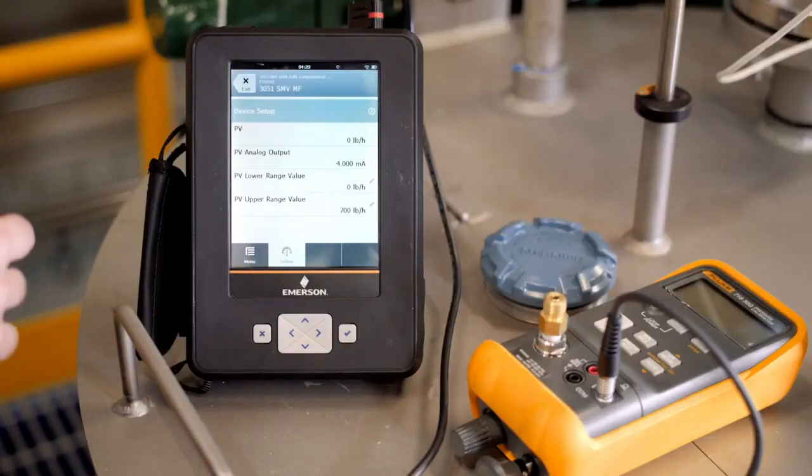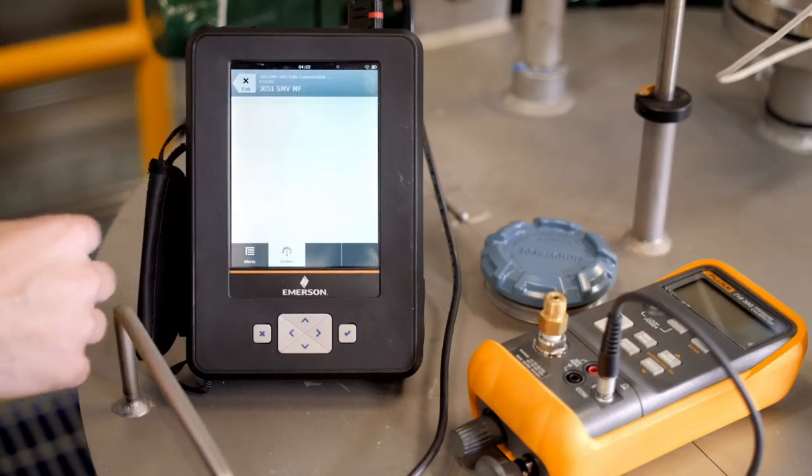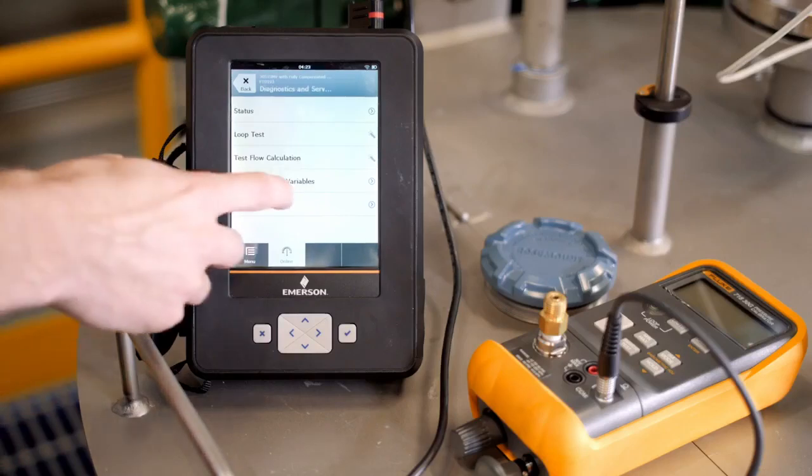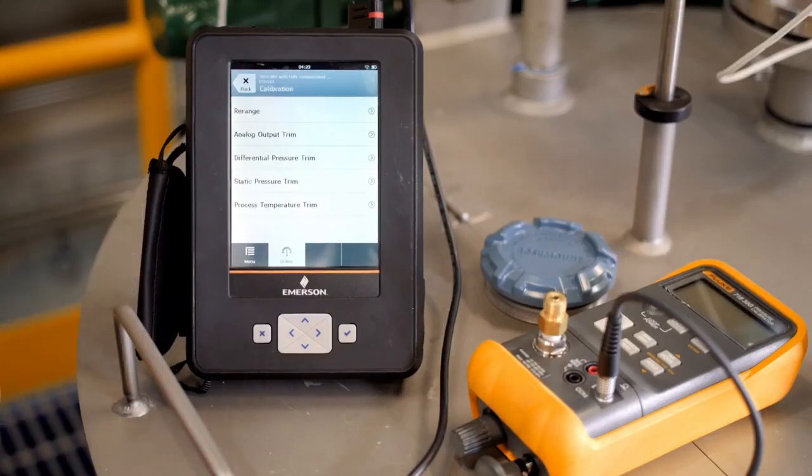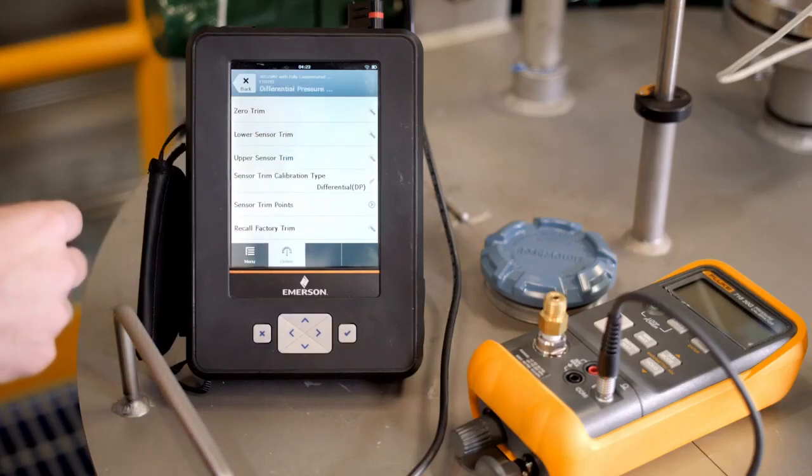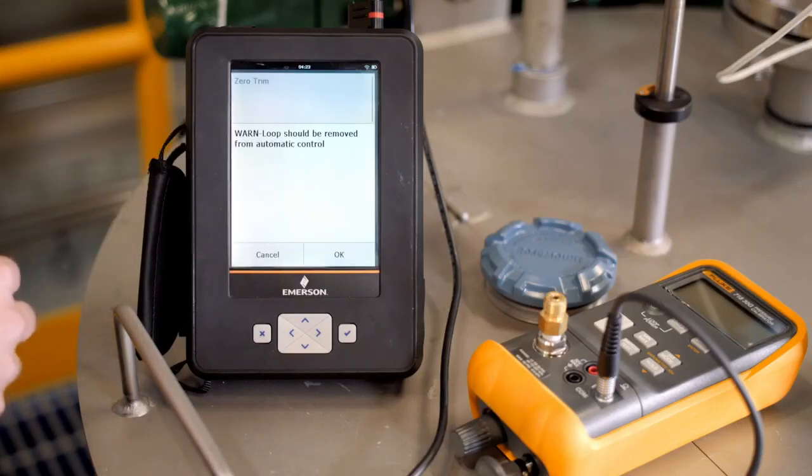To access the zero trim option on the Trex, first find the calibration page. Now select differential pressure trim, then select zero trim. Once you have accessed the zero trim menu, follow the guided wizard. Once each step is complete, zero trim has been successful.